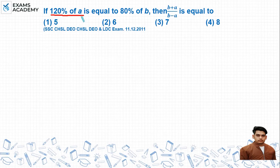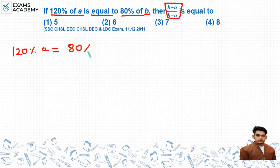So the question is: if 120% of a is equal to 80% of b, then b plus a over b minus a is equal to what? The question gives us 120% of a is equal to 80% of b.